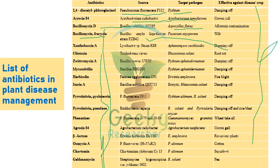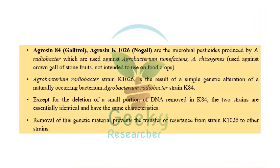Agrocin K84 refers to Agrobacterium radiobacter K84, trade name Galltrol. Agrobacterium radiobacter K1026 has the trade name Nogall or Digall. These are microbial pesticides produced from Agrobacterium radiobacter, used as biocontrol antagonists against Agrobacterium tumefaciens.